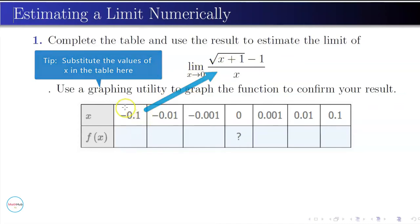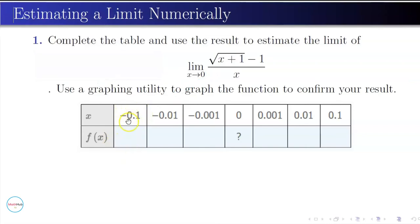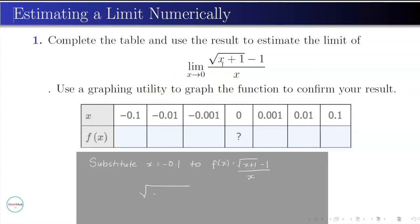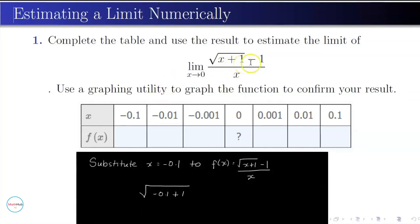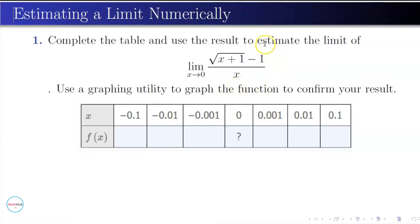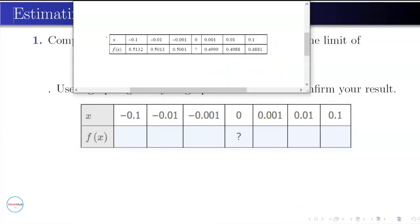So for instance, for the first column, we will replace x by negative 0.1. So you have negative 0.1 plus 1 minus 1 all over negative 0.1. And then you input that to your calculator. So when you do that, this is what you're going to get. If x is equal to negative 0.1, f of x will be 0.5132.